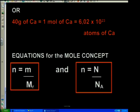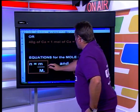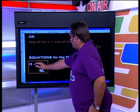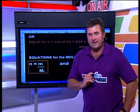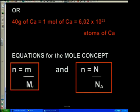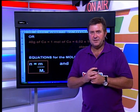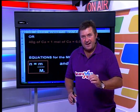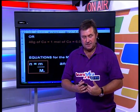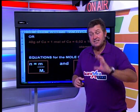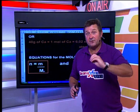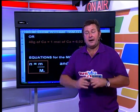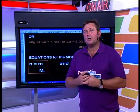From these concepts we develop two key equations. The first is based on mass: n = m / M (number of moles equals mass divided by molar mass). The second is based on particles: n = N / Nₐ (number of moles equals number of particles divided by the Avogadro number, 6.02 × 10²³). These two equations are absolutely critical to the mole concept.